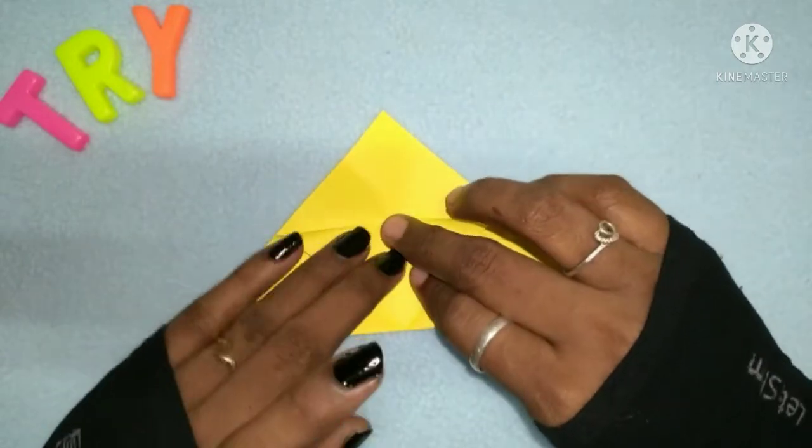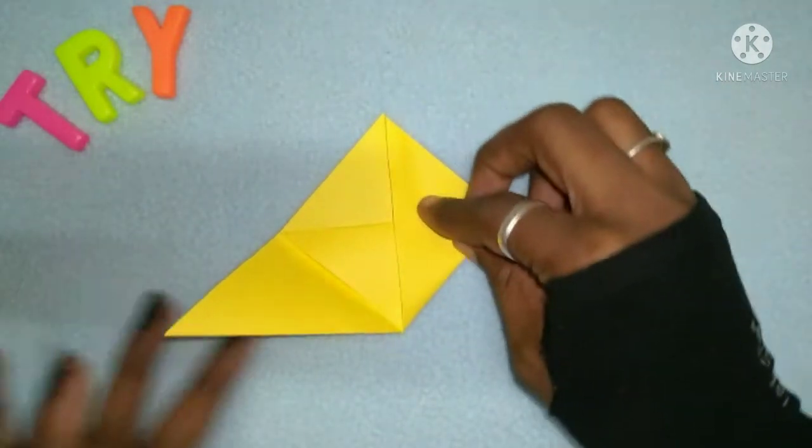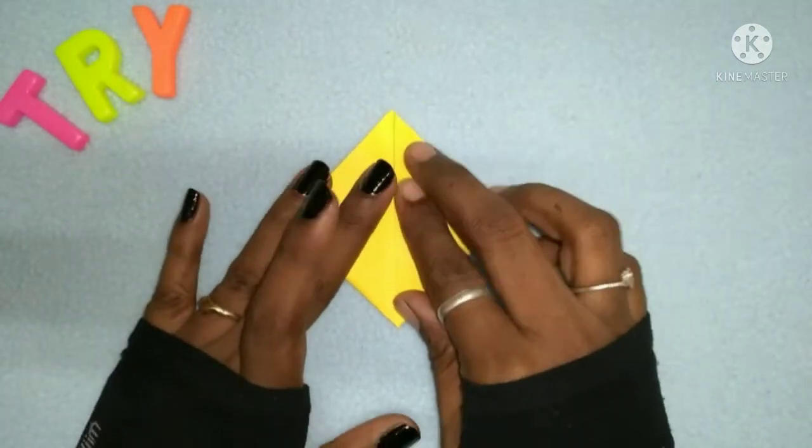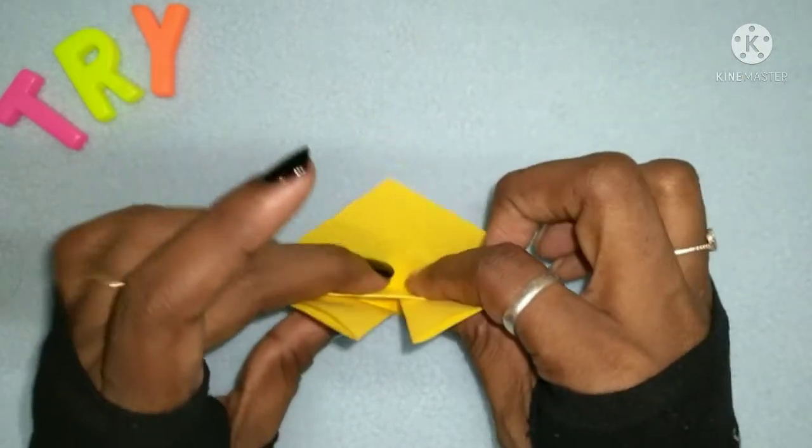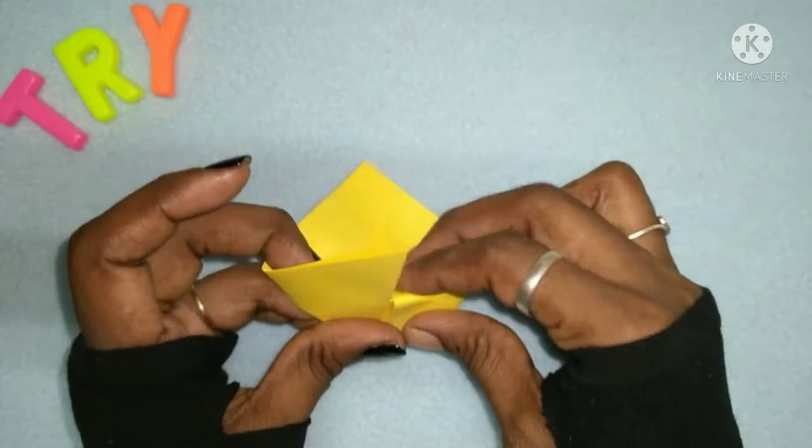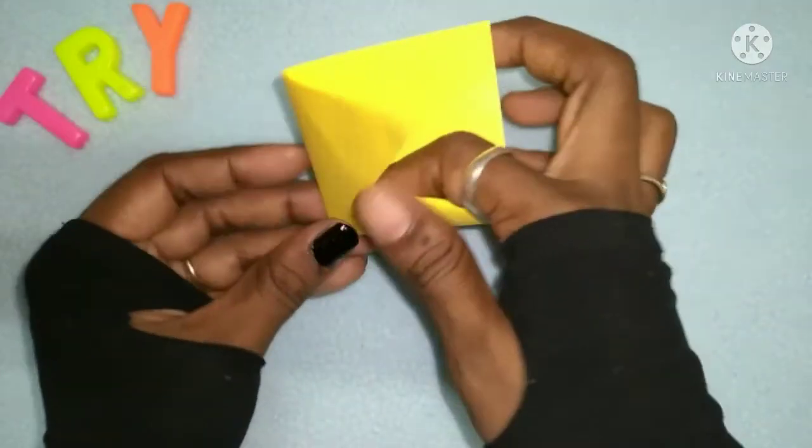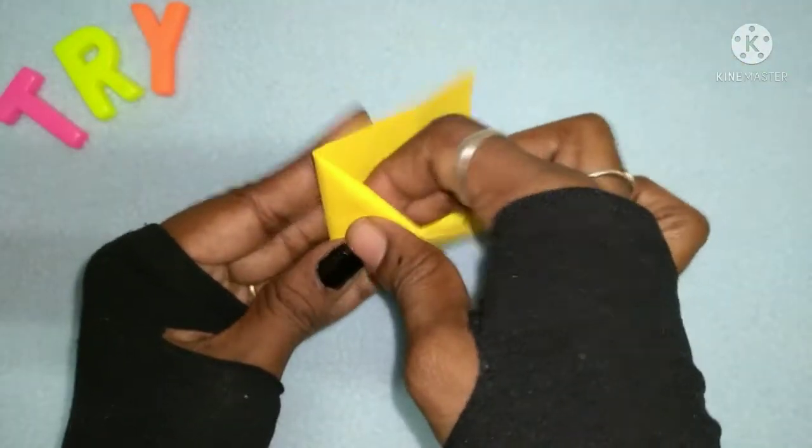Fold it in the middle. Bend the top and place the top. Fold it in the middle again, insert the edges, and you're done with the basic shape.